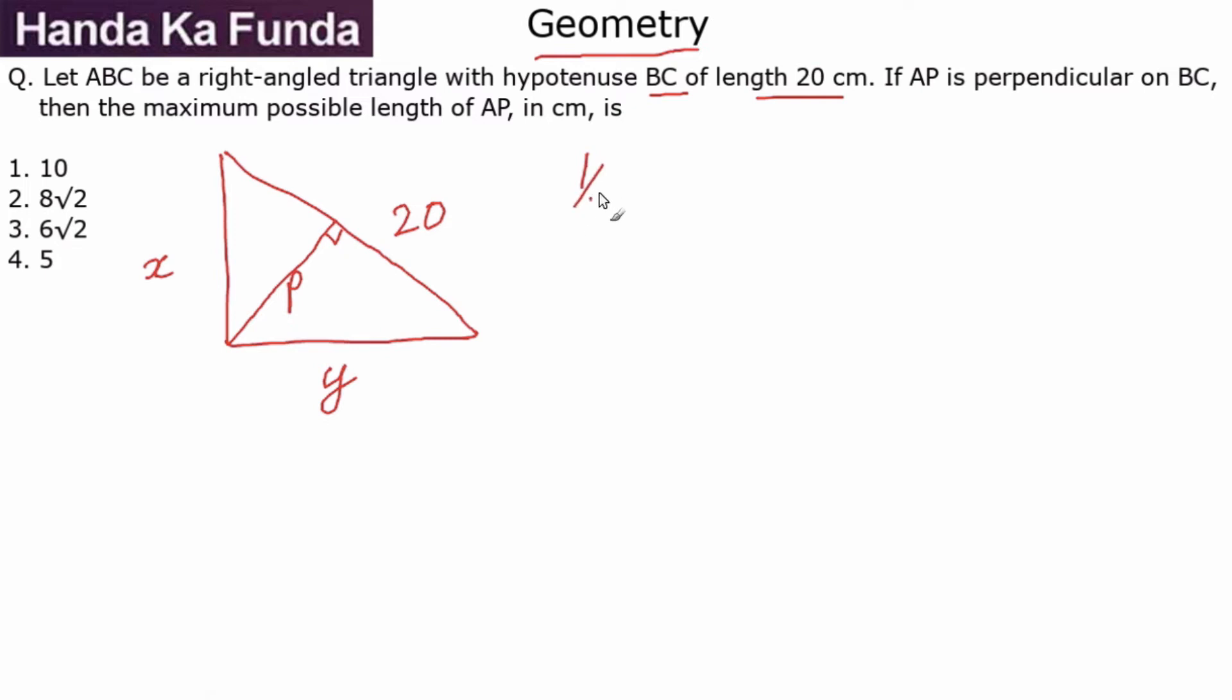Then first of all, what is the area of the triangle? Area of the triangle is half base into height, so half XY. Or I can also take this as half of 20 into P because if the base is 20, the height is P, which means I have 20P equals XY.